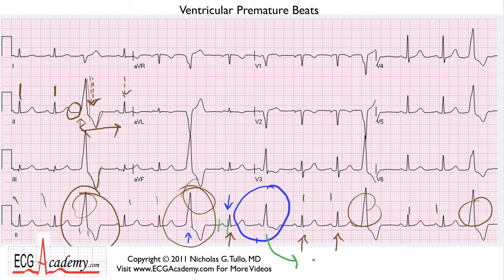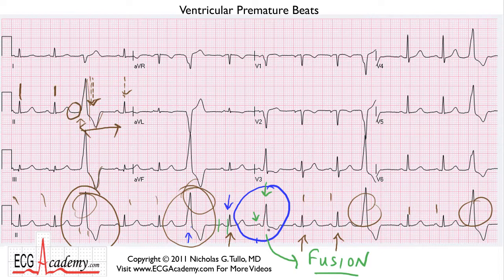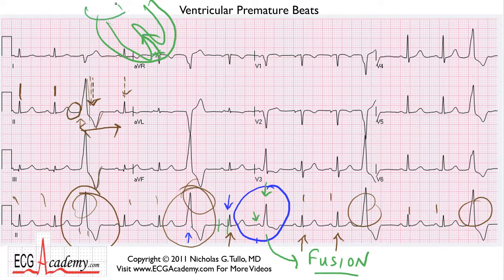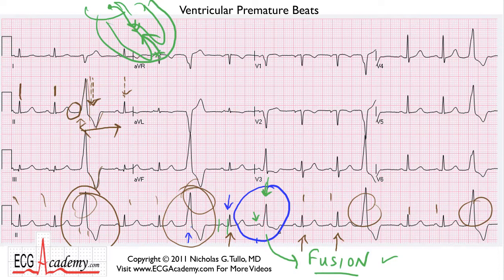This is a fusion beat. A fusion beat implies that part of the QRS complex came from the P wave down the normal conduction system, but at the exact same moment, a ventricular premature beat arose somewhere in the ventricle and they met halfway. You've got the ventricular premature beat traveling up while the normal sinus beat goes down the AV node, and they kind of meet halfway. Seeing fusion complexes is a very good indicator that you're dealing with premature beats coming from a different part of the conduction system.